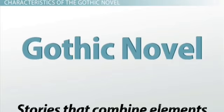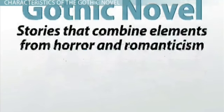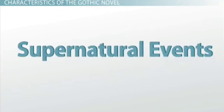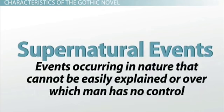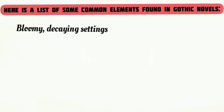Characteristics of the Gothic Novel: The term Gothic novel broadly refers to stories that combine elements of horror and romanticism. Gothic novels often deal with supernatural events or events occurring in nature that cannot be easily explained, or over which man has no control, and they typically follow a plot of suspense and mystery. Here is a list of some common elements found in Gothic novels.